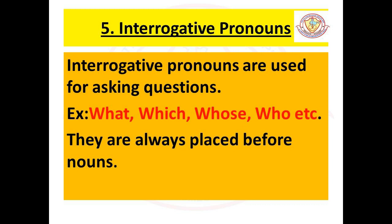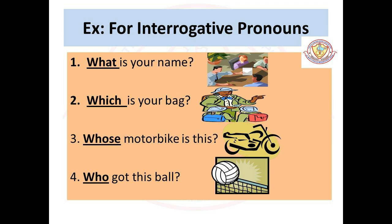The fifth type is interrogative pronouns. Interrogative pronouns are used for asking questions. Examples: what, which, whose, who, etc. They are always placed before the nouns. Examples: 'What is your name?' 'Which is your bag?' 'Whose motorbike is this?' 'Who got this ball?' The underlined and highlighted words — what, which, whose, who — are the examples of interrogative pronouns used for asking questions.